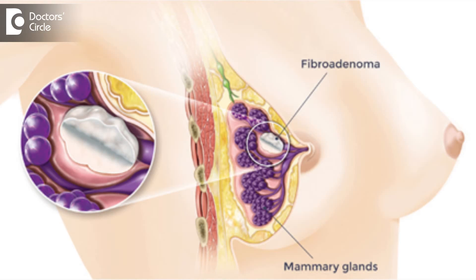When there are multiple fibroadenomas in the breast, it means there is a tremendous amount of hormonal imbalance. It could be a fluctuating hormone — at times less, at times more, or at times normal — and this can lead to clumping and nodular formation of the breast tissue.